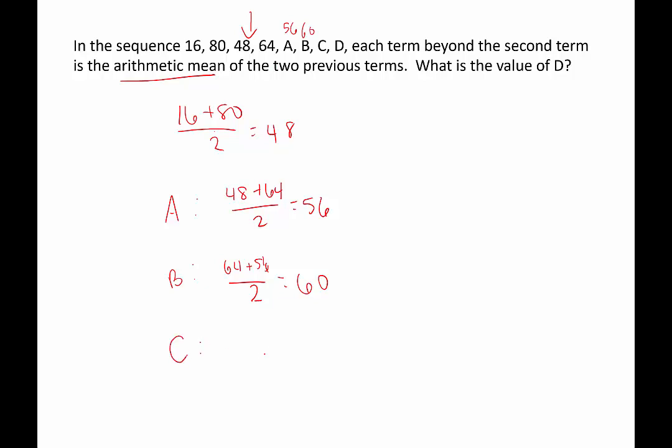To figure out the value of C, we add up A plus B. That would be 56 plus 60 divided by 2. This gives us an average of 58. Now we know C is 58.